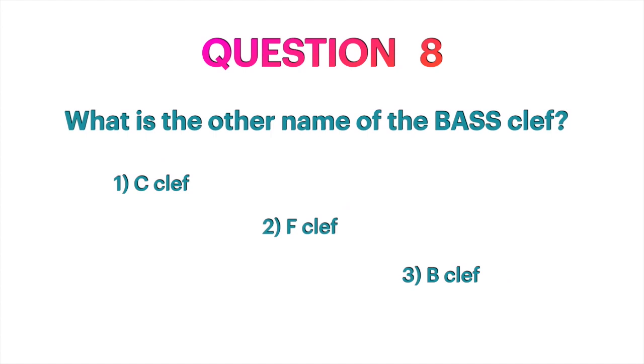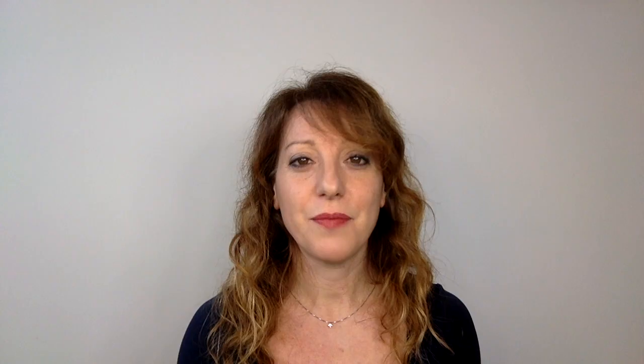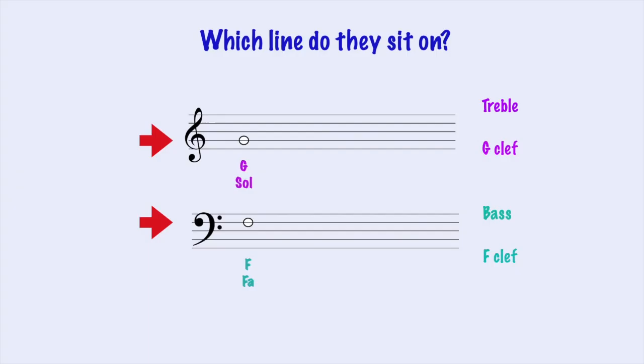Question 8: What is the other name of the bass clef? F clef. Question 9: How does it tell us the position of F on the stave? Because it starts on the fourth line and has two dots around it. The second memo rhyme: the bass clef has dots, the others have not. Treble clef — G clef; bass clef — F clef with dots.